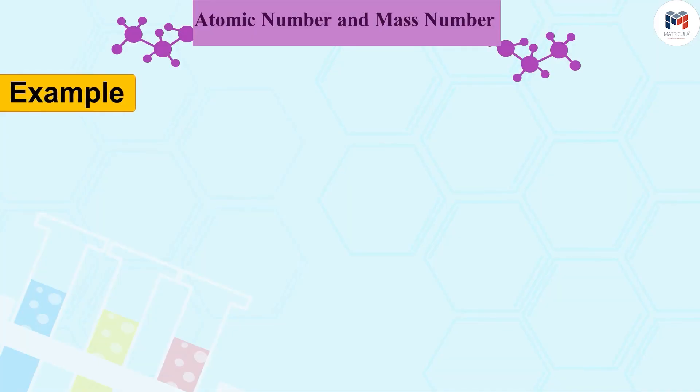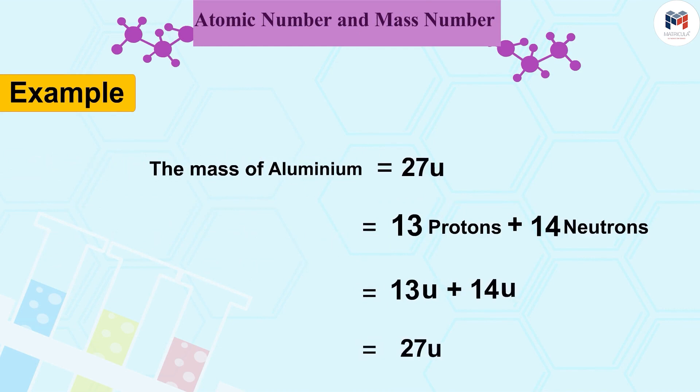For example, the mass of carbon is 12u because it consists of 6 protons and 6 neutrons. Similarly, the mass of aluminium is 27u because it has 13 protons and 14 neutrons.